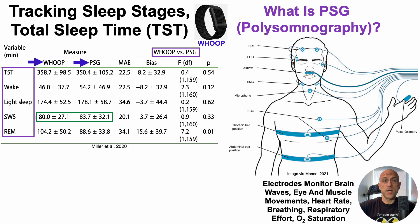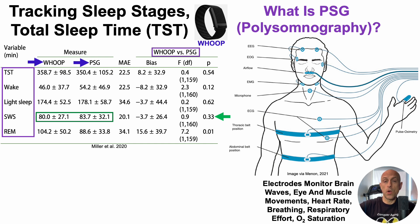So how does Whoop compare? Focusing on slow wave sleep duration: Whoop in this study quantified an average of 80 minutes per subject, whereas PSG calculated 84 minutes. The p-value shows those two groups were not significantly different, indicating that Whoop is as good as the gold standard PSG for detecting and quantifying slow wave sleep.